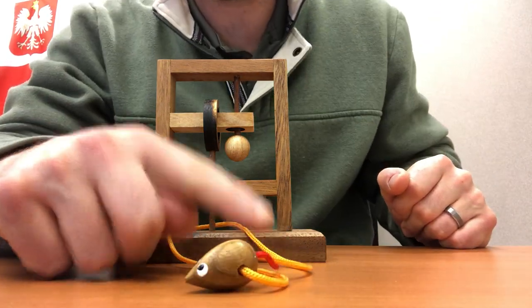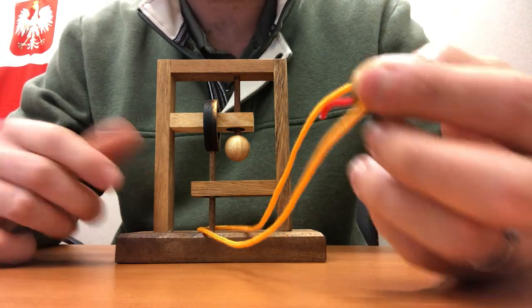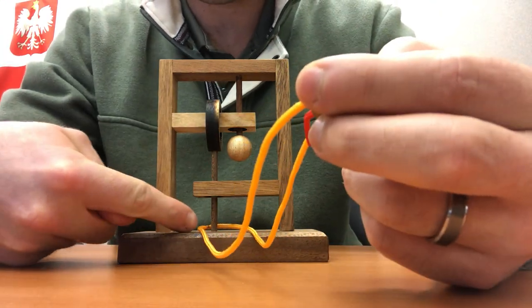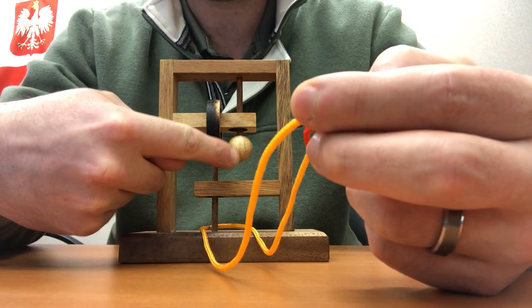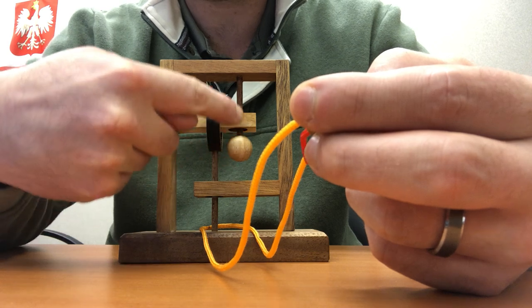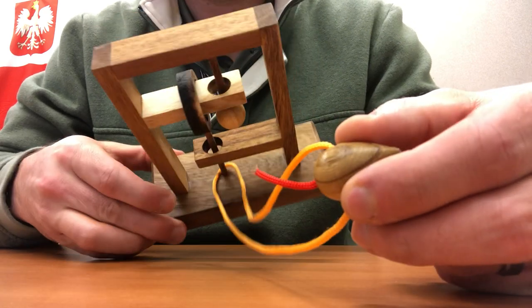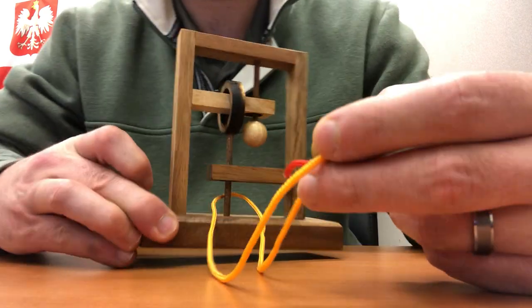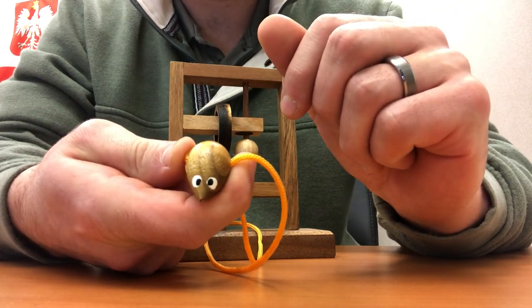This little guy right here is trapped. How are we going to get him out? Let's figure it out. We've got a rope wrapped around this pool right here in the center. We've got this ball or sphere attached to this pool, and this is a ring. So how in the world are we going to undo this?